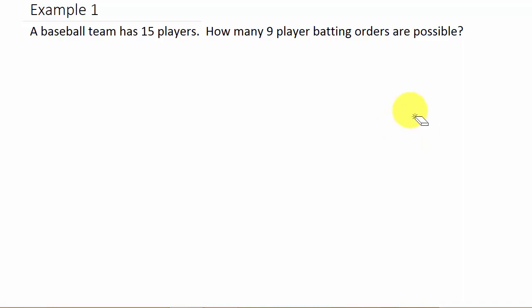The order that I chose them made a difference, and that tells us it's a permutation because the order I chose made a difference. So I know this is a permutation. I've got 15 players and I'm choosing 9 of them.